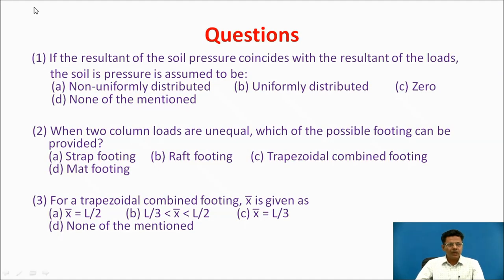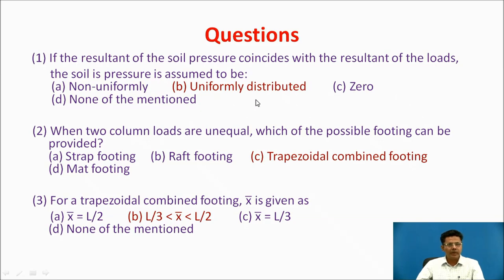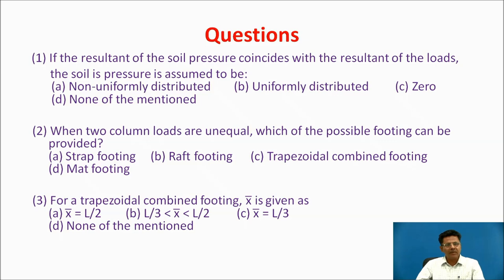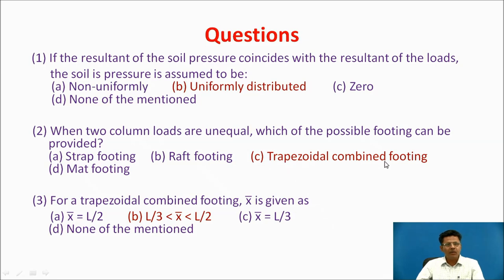Question 1: If the resultant of the soil pressure coincides with the resultant of the loads, the soil pressure is assumed to be: (1) non-uniformly distributed, (2) uniformly distributed, or (3) none of the mentioned. Answer: uniformly distributed. Question 2: When two column loads are unequal, which of the following footings can be provided? Option 1: trap footing; Option 2: wrap footing; Option 3: trapezoidal combined footing; Option 4: mat footing. Answer: trapezoidal combined footing.